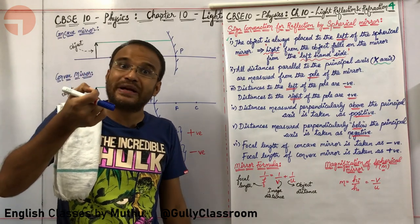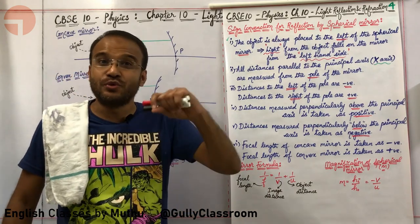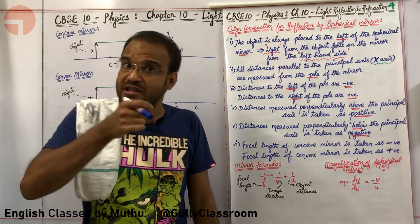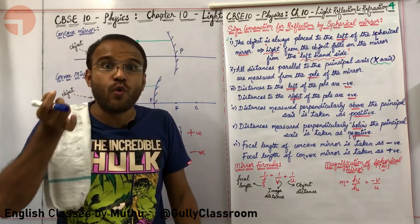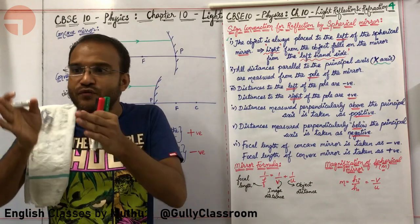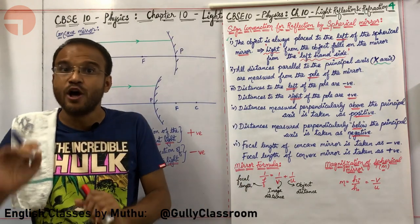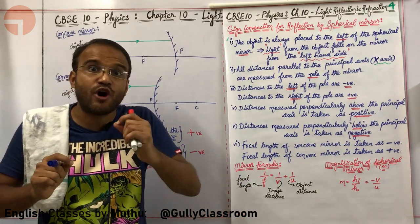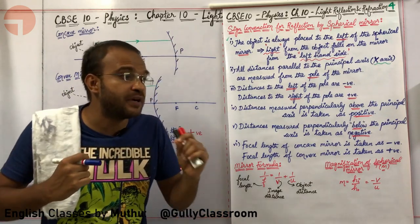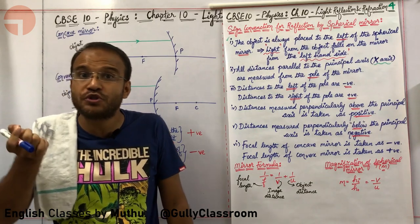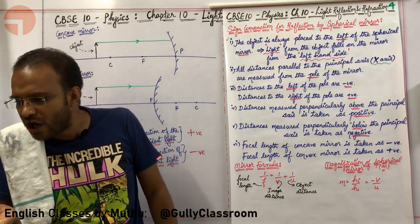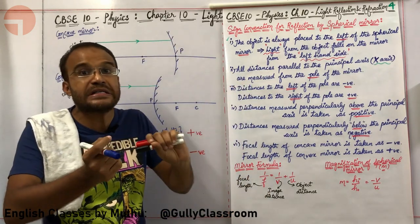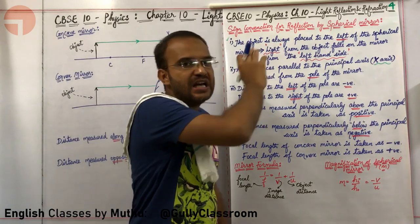In order to better understand this lecture, you definitely need to study at least the first 25 minutes of the third lecture. In the third lecture, I taught you what types of images are formed for different positions of objects in both concave and convex mirrors. You need to know that clearly in order to understand what is happening with respect to sign conventions.